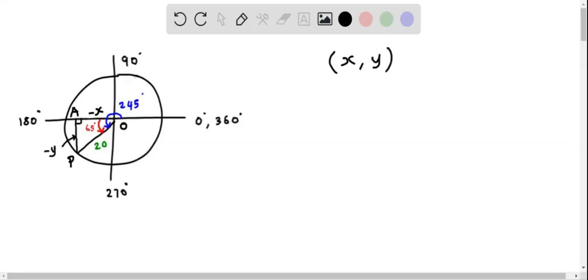We now determine the coordinates of a point which makes an angle of 245 degrees on a circle of radius 20 units.